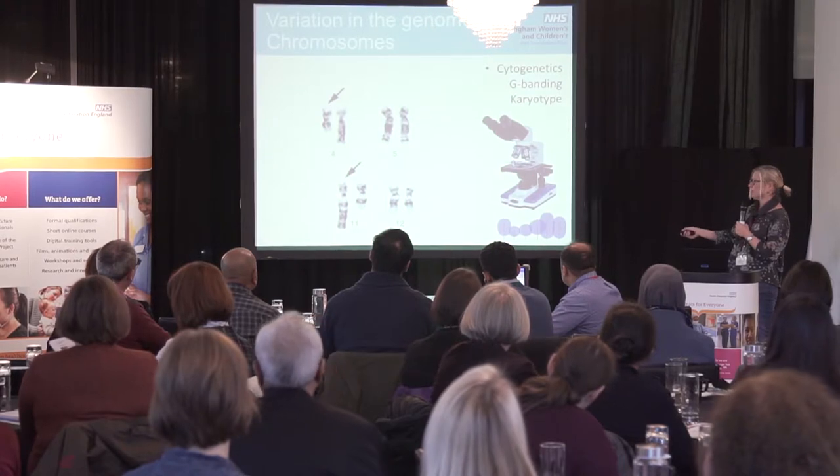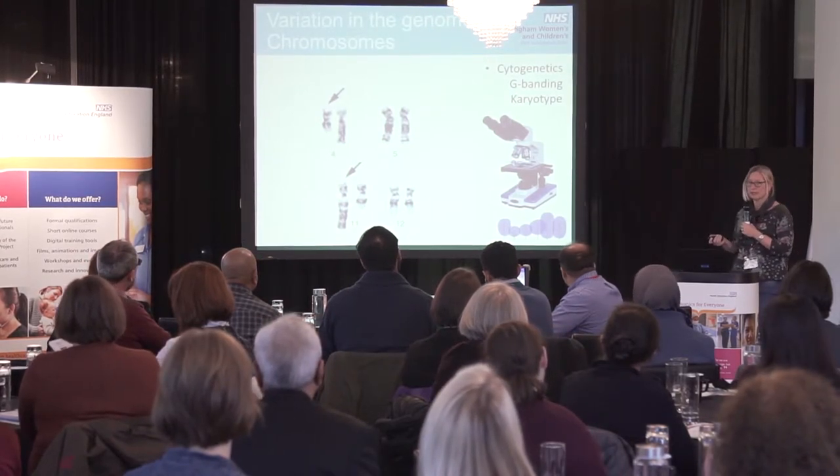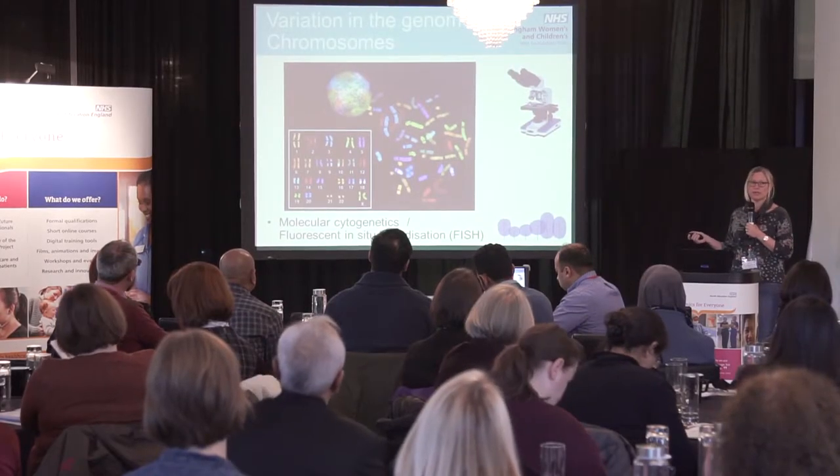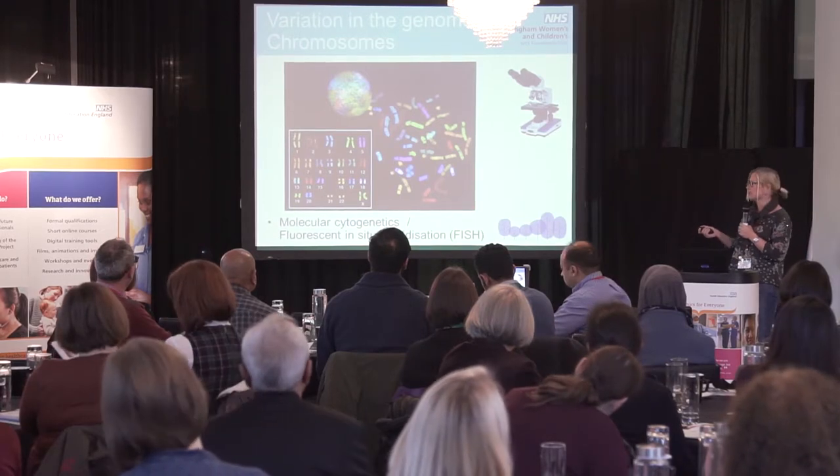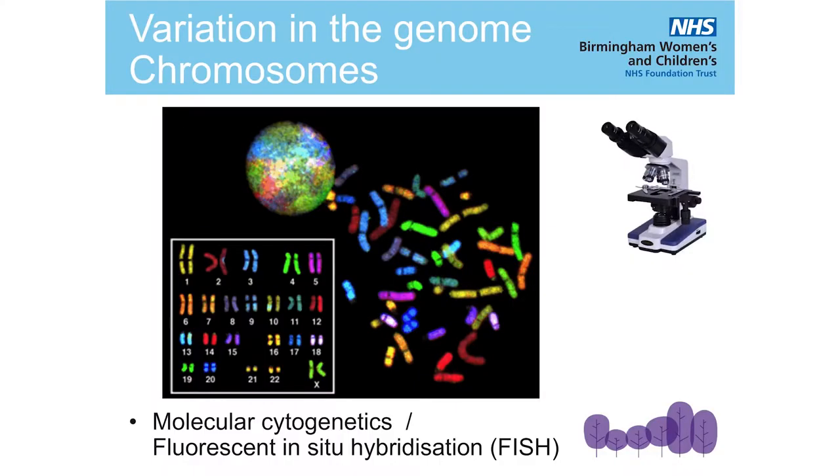Moving on from looking at chromosomes when they're visible down the microscope — in some situations that's just not possible, either because cells aren't actively dividing or because the aberrations involve the very tips of the chromosomes and are cytogenetically cryptic. Then we can use another very powerful technique called fluorescent in-situ hybridisation, or molecular cytogenetics. This particular example illustrates a technique called Multicolour FISH, or SKY, not commonly used in diagnostic labs, but it shows you what the technique can do.